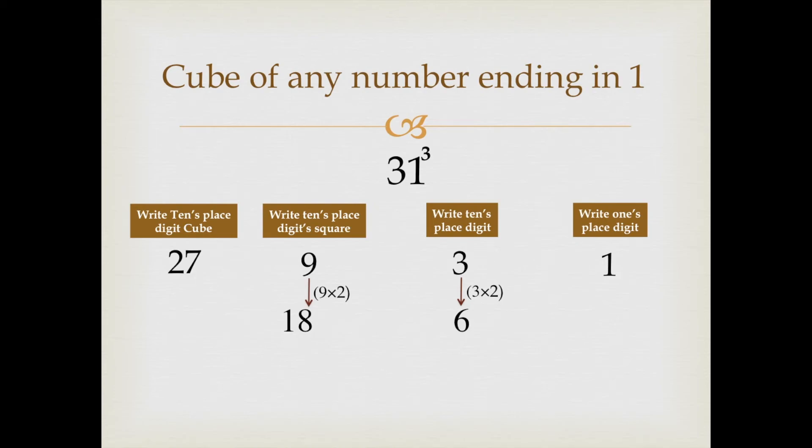Now, we will start writing the answer from right to left. Write down the last digit which is 1 as it is. 3 plus 6 becomes 9. Write down 9.